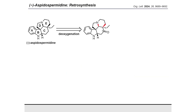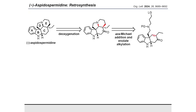In our retrosynthetic analysis, aspidospermine would be obtained from a deoxygenation of 4-oxy-aspidospermine. The keto group thereof can be regarded as the residual functionality of the preceding alpha-beta unsaturated ketone, which is anticipated as the bifunctional handle for establishing both the D and E rings. Thus, the D and E rings would be installed by an N-deprotection, azomethine addition, and intramolecular enolate alkylation from the alpha-beta unsaturated ketone.